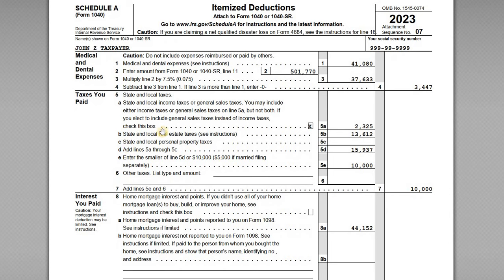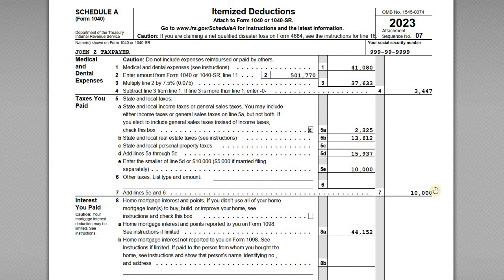So $13,612 is the amount John can actually report on line 5b as a state and local real estate tax deduction. In this example, like many taxpayers, it's ultimately somewhat moot because the cap on state and local taxes — income taxes, sales, and real estate combined — is limited to $10,000 for this year. But if your total taxes are certainly less than $10,000, this amount will matter, which is why it's important to include only the component that is actually deductible as an ad valorem tax.